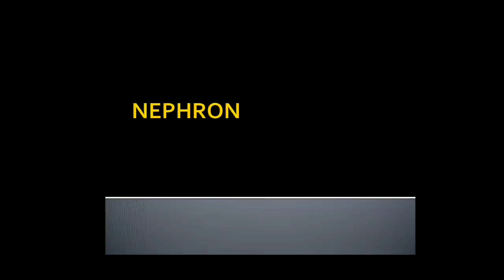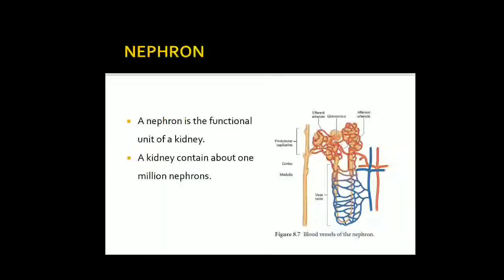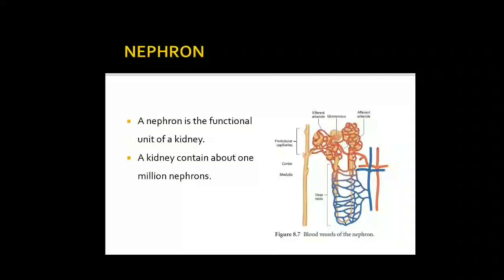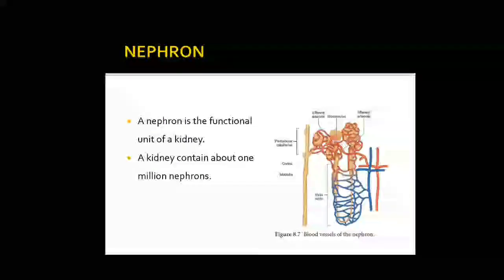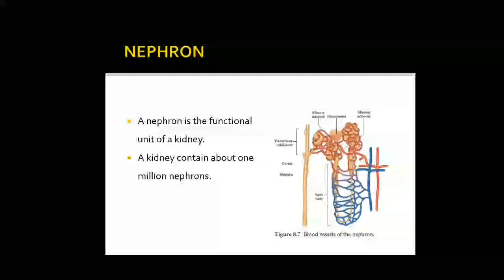Good morning children. Today we will study about nephron. Where are nephrons present? Nephrons are present inside the kidneys and these are the units which help in filtering the blood and purifying the blood. What is a nephron? Nephron is the functional unit of a kidney, and a kidney contains about 1 million nephrons. Since you have 2 kidneys, about 2 million nephrons are present in your kidneys.